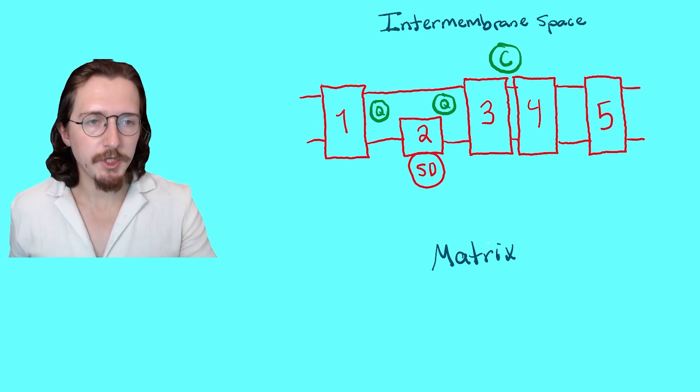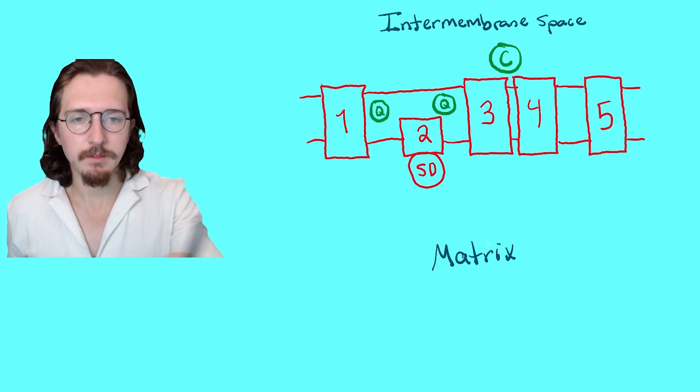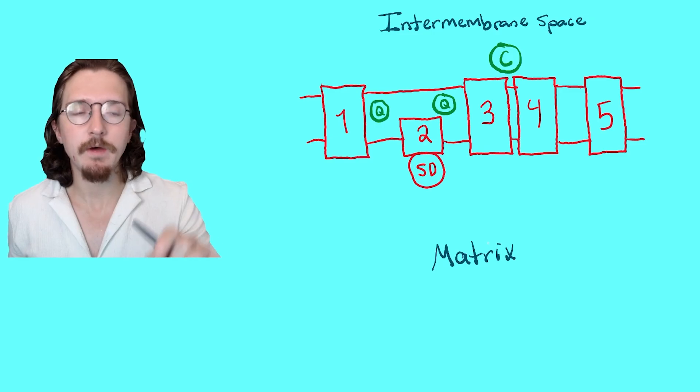Okay, here I've drawn the electron transport chain, and we have the different complexes, so 1, 2, 3, 4, and then complex 5 is ATP synthase.